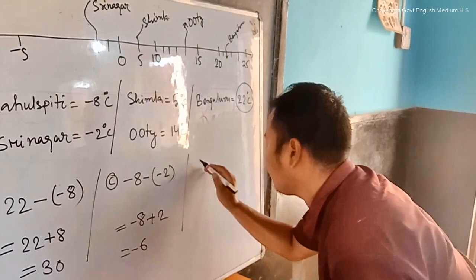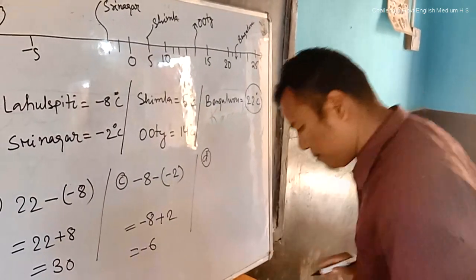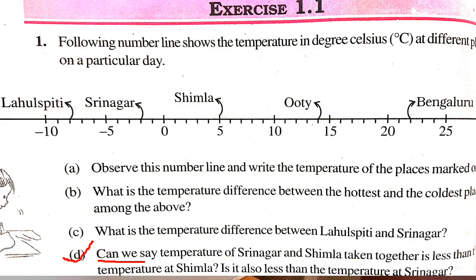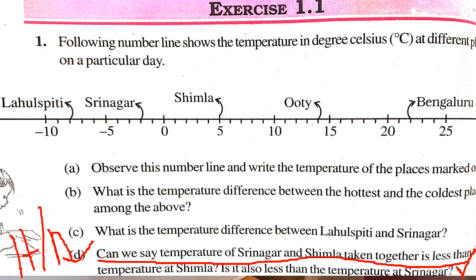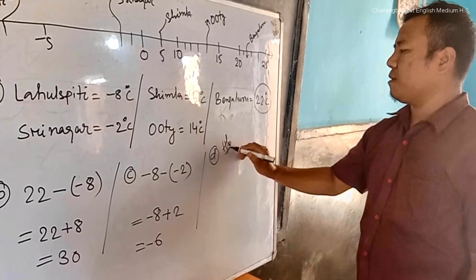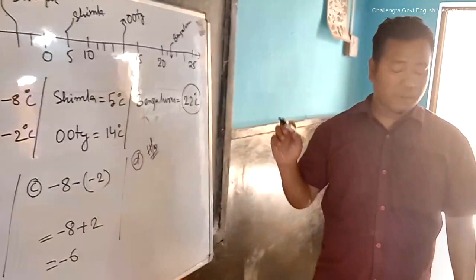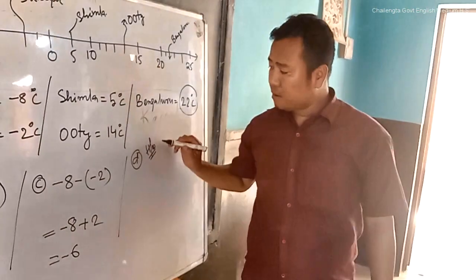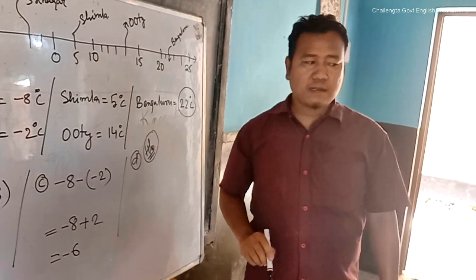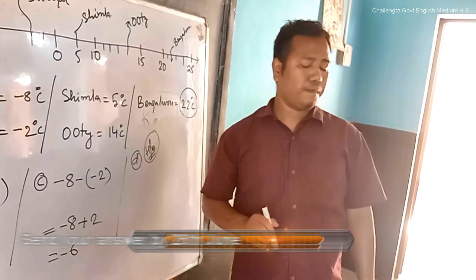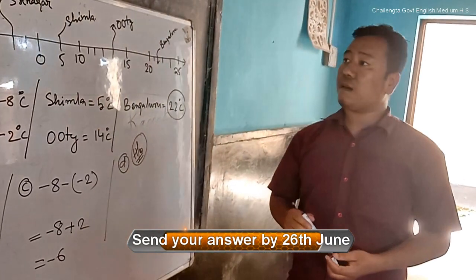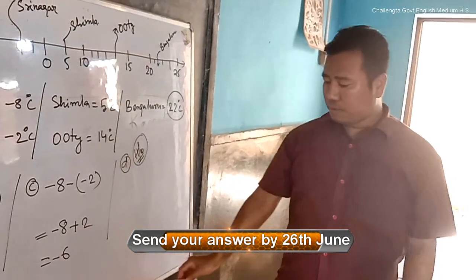We have question number D: Can we say the temperature of Srinagar and Shimla taken together is less than the temperature at Shimla? Is it also less than the temperature at Srinagar? This will be your home assignment. You will try this at home and show me the answer in my personal WhatsApp room.